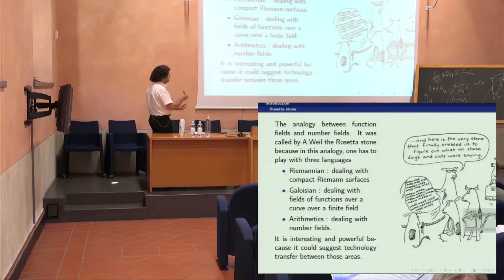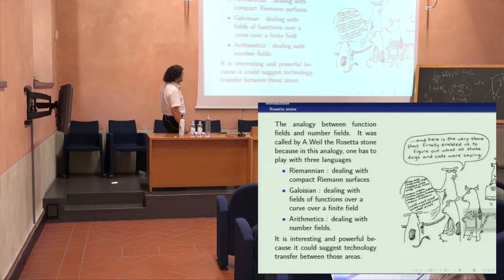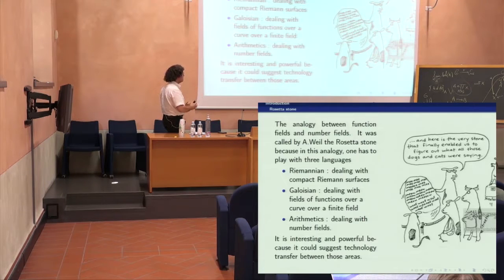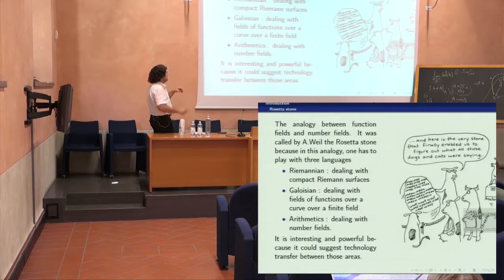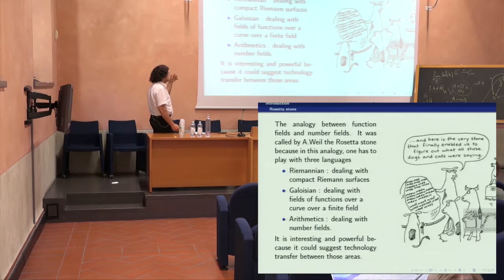It's just another presentation of what Connes did yesterday, but I have to be quicker. It is André Weil who, in a small but interesting article, called a set of analogies arising in algebraic geometry and arithmetic the Rosetta Stone. This stone is constituted with three languages: the Riemannian language dealing with compact Riemann surfaces, the Galoisian language dealing with fields of functions of a curve over a finite field, and arithmetic dealing with number fields.